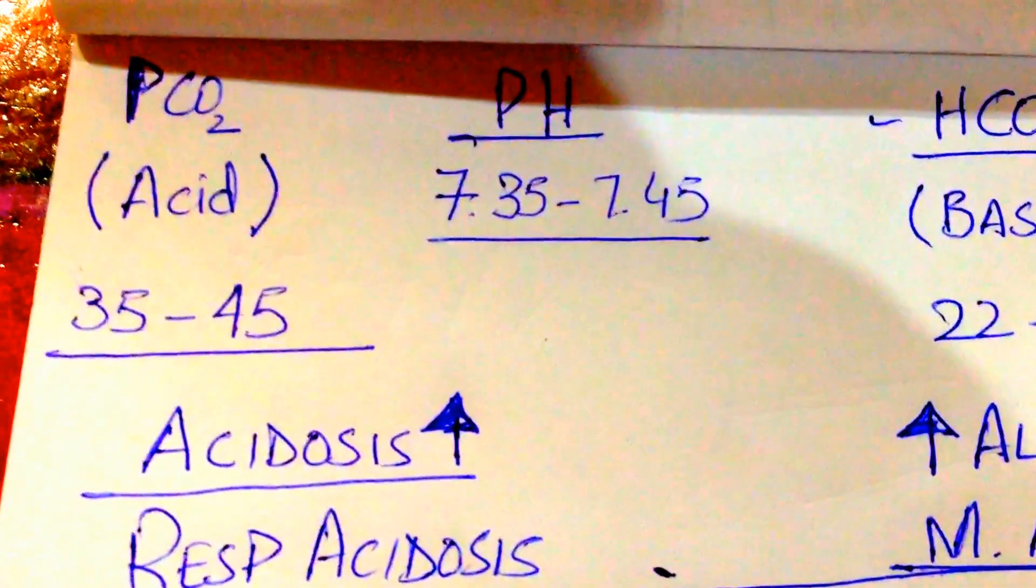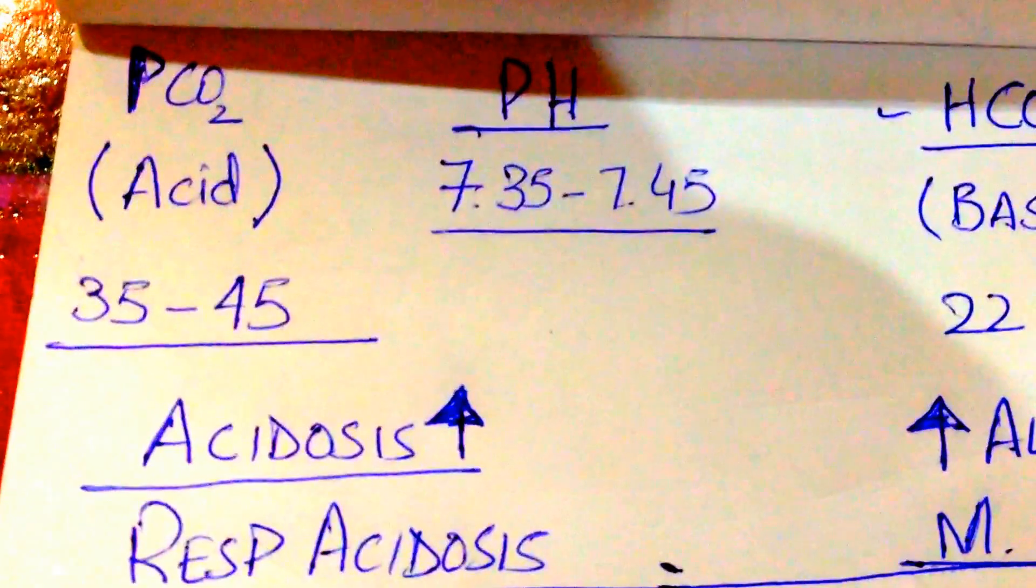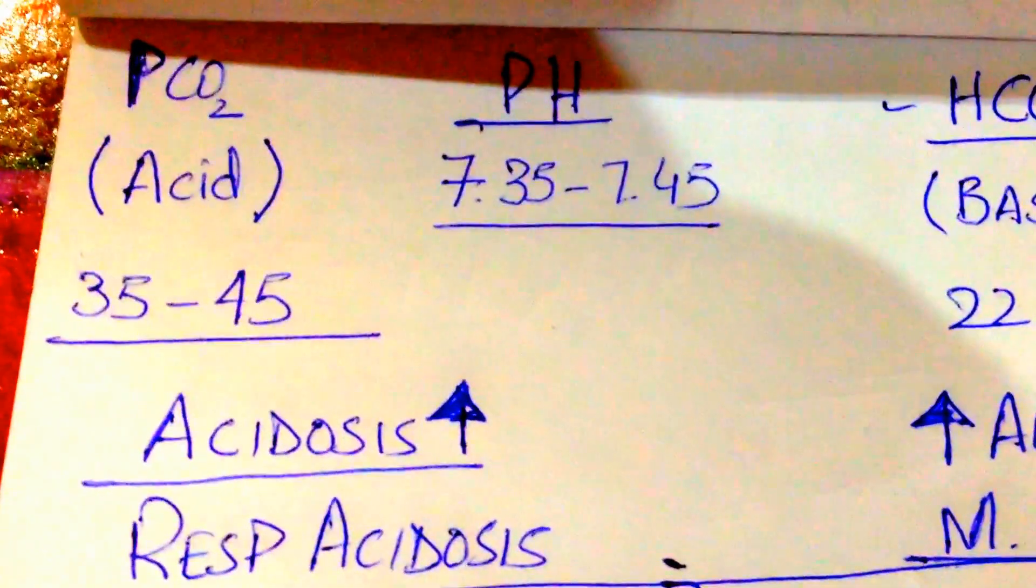The normal pH range is 7.35 to 7.45. Above that is alkalosis, and below that is acidosis.